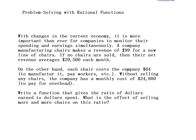We also know that they have costs. Each chair costs them $64 to manufacture — to pay workers, machinery, etc. — and without selling any chairs, the company has a monthly cost of $24,800 to pay for overhead. That might be to pay for lighting, pay other employees, all that kind of stuff. We want to write a function that gives the ratio of dollars earned to dollars spent, and examine the effect of selling more and more chairs on this ratio.